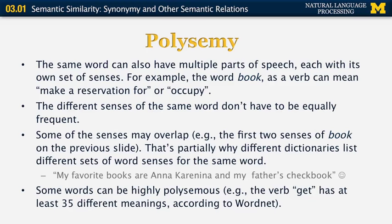The same word can also have multiple parts of speech, each with its own set of senses. For example, the word 'book' as a verb can mean to make a reservation or to occupy. The different senses of the same word don't have to be equally frequent. For instance, the sense of S-E-E as 'to watch or observe something' is very frequent, but the sense of S-E-E as 'the holy see' — referring specifically to the Vatican — is only used in a very specific context.